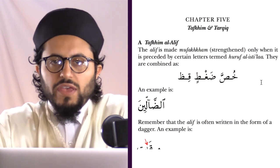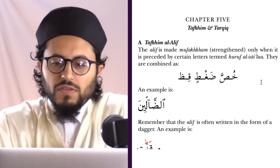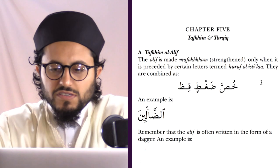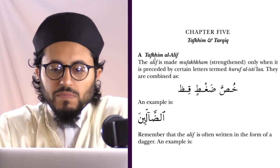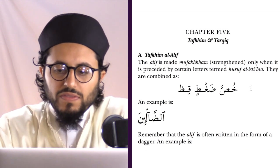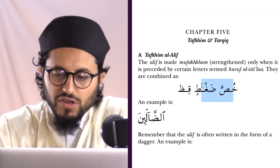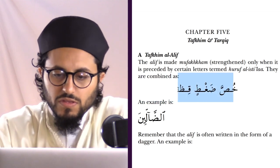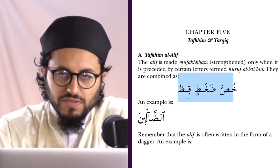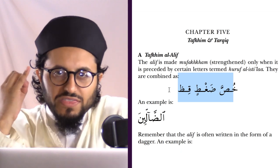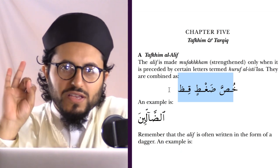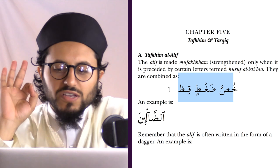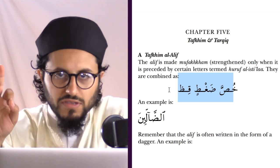The next letter set is tucked into chapter 5 on the Tafkheem Al-Alif, and this letter set is Khussah Doghtin Qidh. You're going to have to memorize فَحَثَّهُ شَخْصٌ سَكَتٌ, and you're going to memorize قُطُب جَدٌ, and you're going to memorize Khussah Doghtin Qidh.